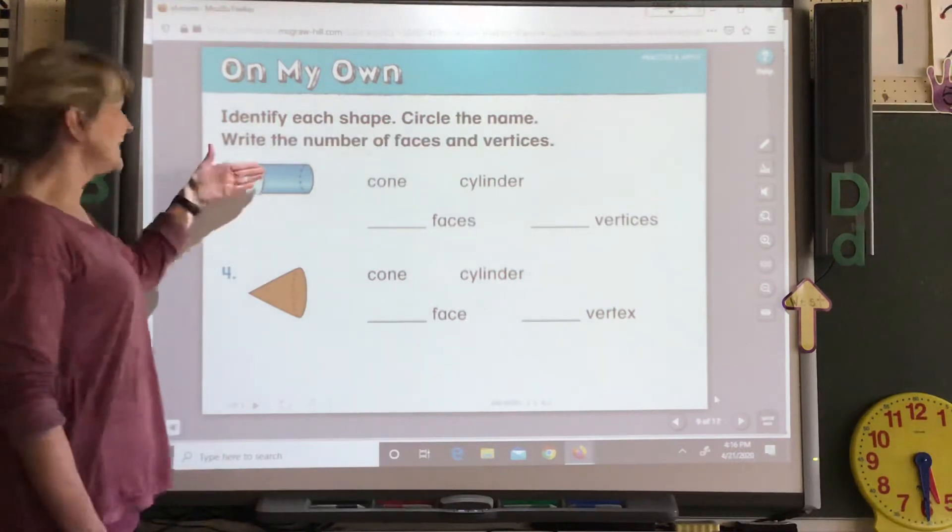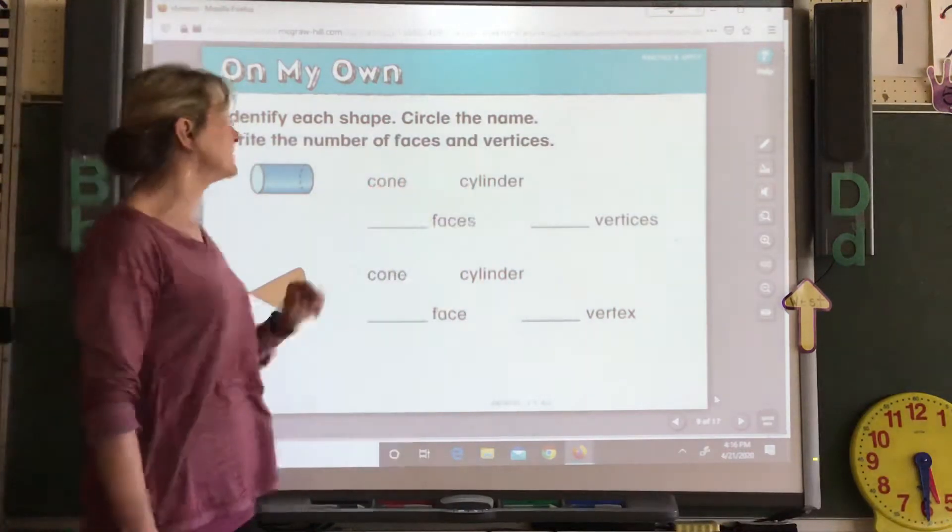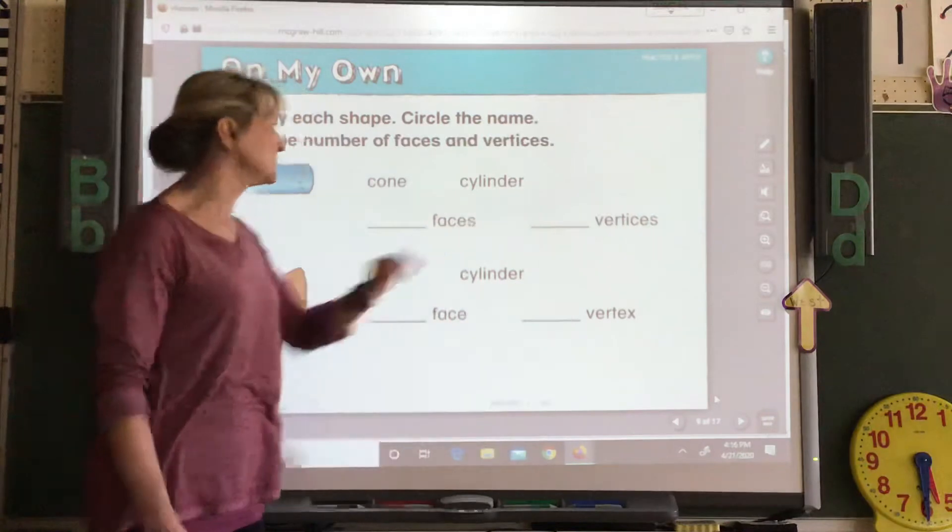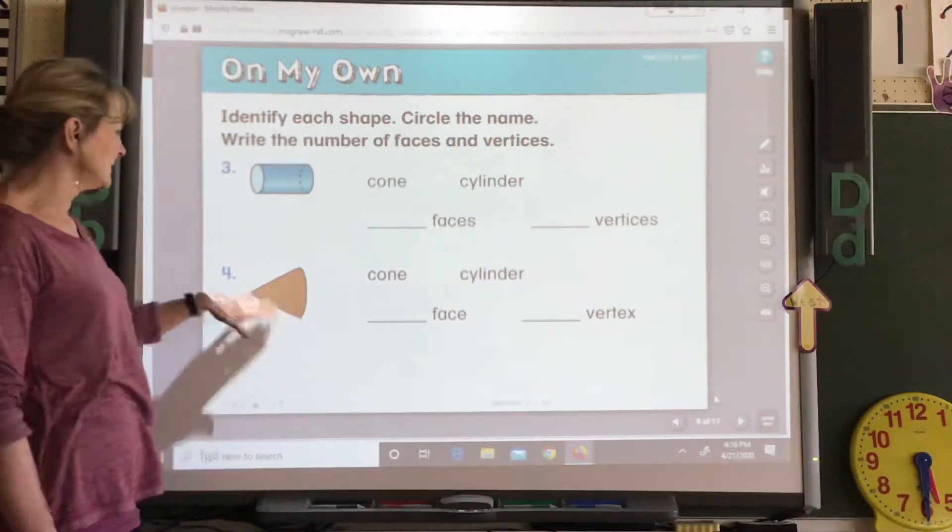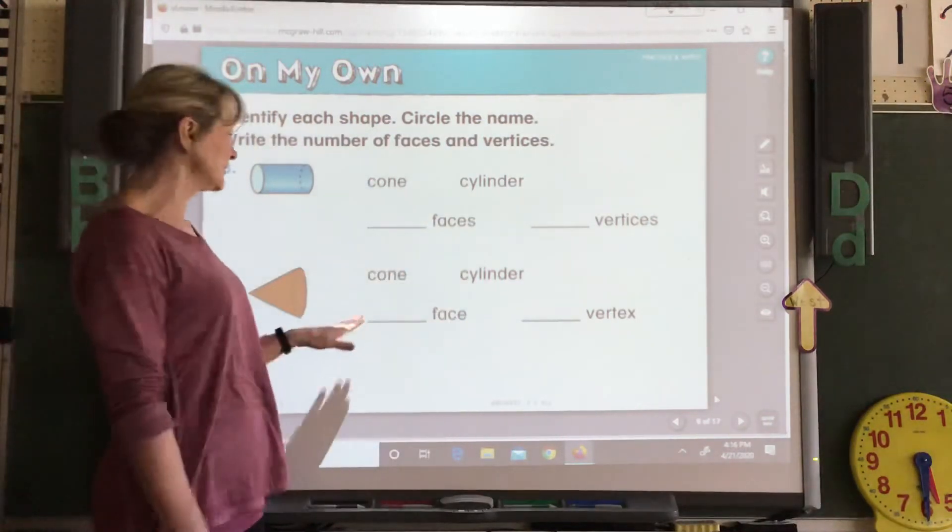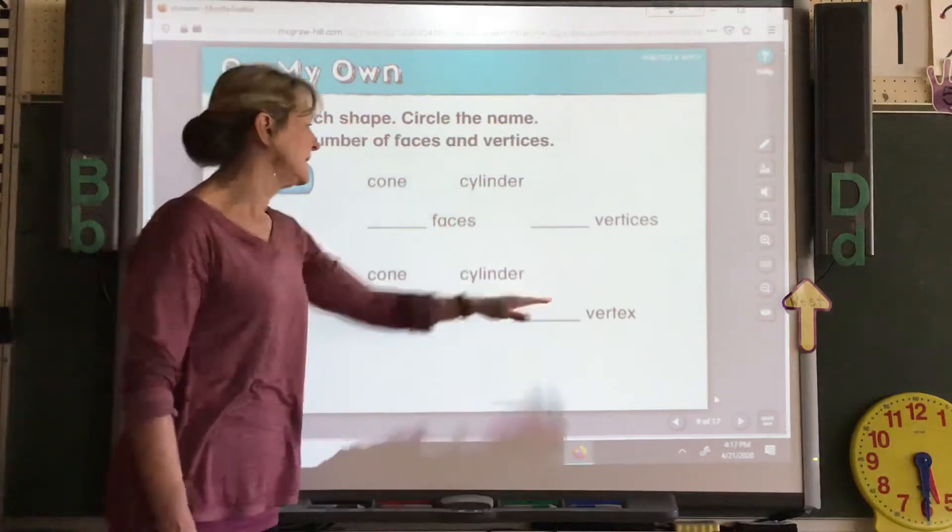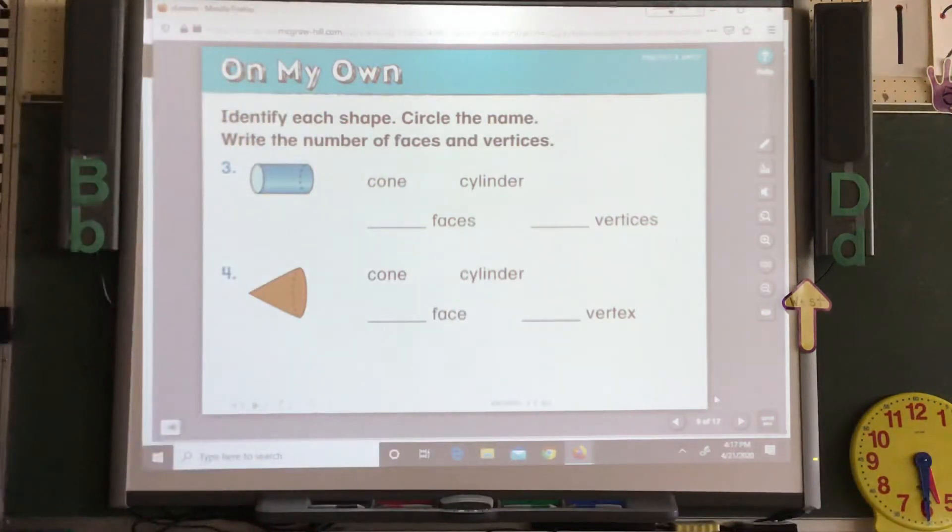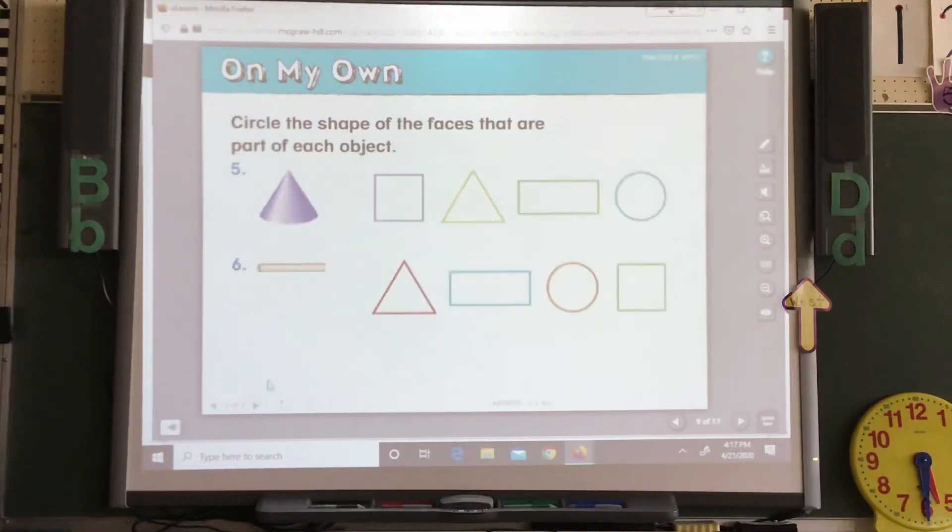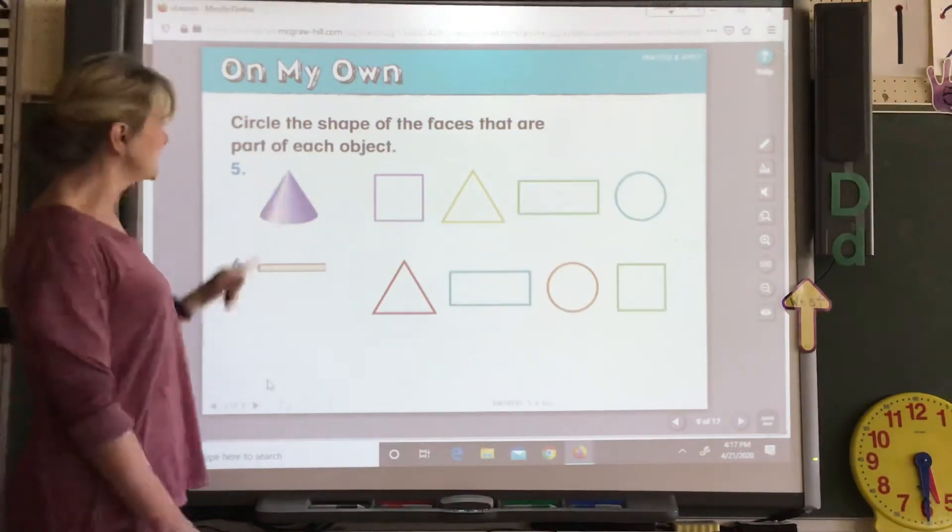Same thing. Shows you a shape. Circle whether it's a cone or a cylinder. Write how many faces or vertices. And shape. Is it a cone or cylinder? Write how many faces. How many vertices or vertex it has. And then here it shows you your shape.